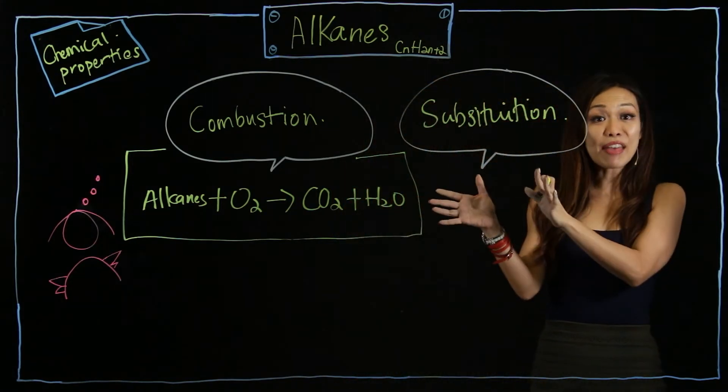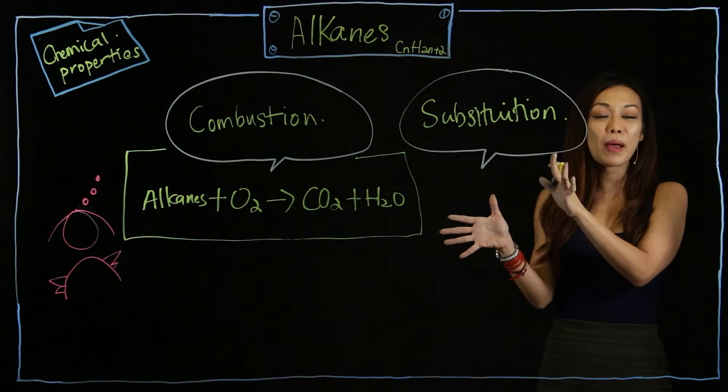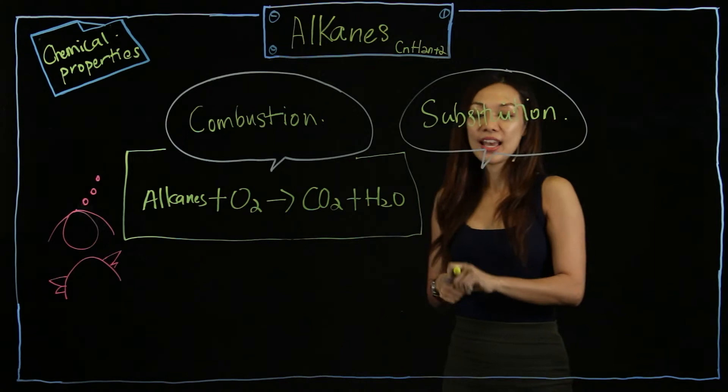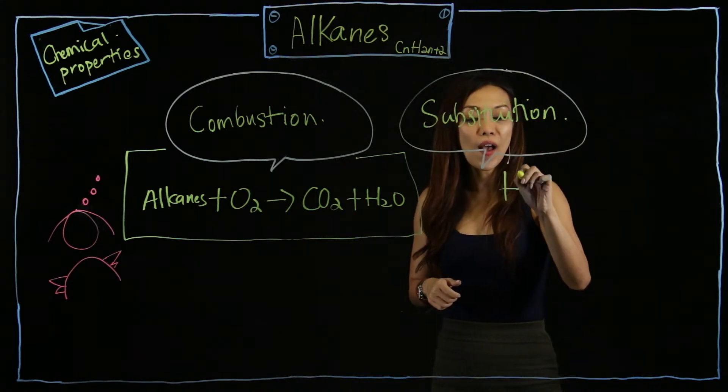Substitution is like in math. When you do simultaneous equation, you like to substitute x to y. Same thing. They also substitute. But, substitute with this group called halogen.